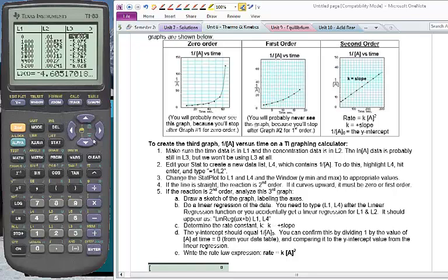So hit stat, edit. And we'll see numbers there in L1, L2 and L3. We now want to plot time on our x axis but 1 over the concentration over the L2 values on our y axis. So let's go over to L4. And we can select L4. And if we do 1 divided by second L2 that should give us the numbers that we want there. And we see they go from about 100 up to about 500.